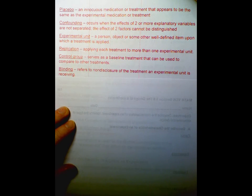Blinding refers to non-disclosure of the treatment an experimental unit is receiving. So that's when we want to make sure that the people getting the placebo and the people getting the actual medication, for example, in a medical study, they don't know which one they're getting. That's what we call blinding. Because somebody might actually feel better because they think they're taking the medicine. Or not get better because they know they're not taking the medicine.